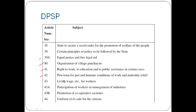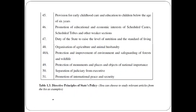Article 42 provides for just and humane conditions of work and maternity relief. Article 43 is living wage for workers. Article 43A is participation of workers in management of industries. Article 43B is promotion of cooperative societies. Article 44 is a uniform civil code for the citizens. Different religious sects have different personal laws — their marriage laws and hereditary laws are different — and a uniform civil code is mentioned in the Directive Principles of State Policy.